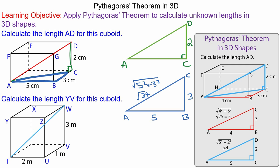The hypotenuse is the square root of 5 squared plus 3 squared, which gives the square root of 34. We can use this length from this triangle because it is the same as the adjacent side of the green triangle. We can now work out the length A to D as the square root of root 34 squared plus 2 squared. That becomes 34 plus 4, giving us root 38, or 6.16 centimeters.